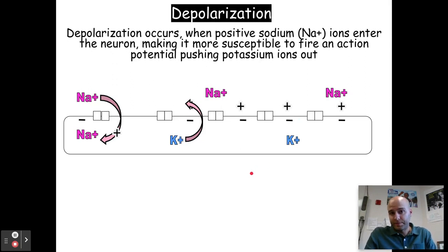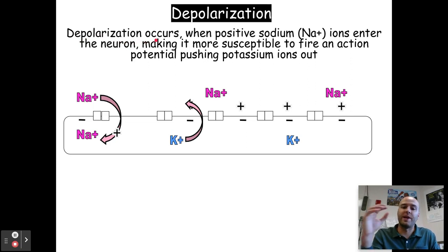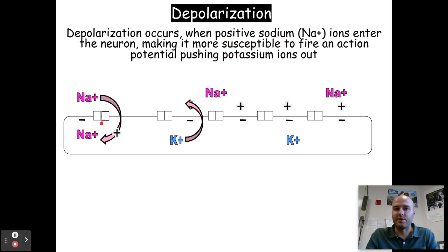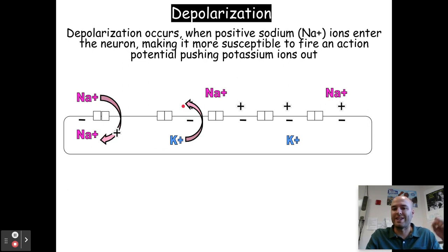When the action potential occurs, this is also called depolarization. When a neuron was polarized, we had negative charge inside and positive charge outside — they were separate. When depolarization occurs, those positive sodium ions enter the neuron, making it more susceptible to fire an action potential, pushing out the potassium ions. So they mix — sodium comes in and potassium flows out — and that's what allows the message to be sent. That's called depolarization.